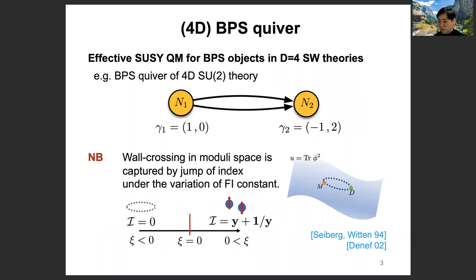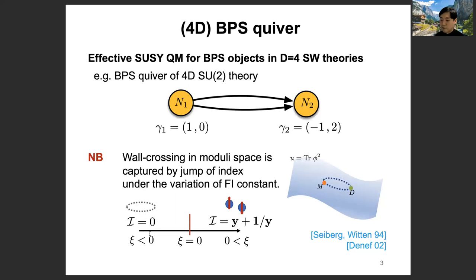This is a nice tool to capture the wall-crossing behavior on the moduli space of Seiberg-Witten type theories. Wall crossing in 4D theory is captured by the jump of Witten index under variation of FI constants. For instance, in the case of 4G-SE2 pure gauge theory, in the asymptotic region of moduli space, the theory is weakly coupled and the W-boson is a stable particle. But near the center, the W-boson decays into monopoles and dyons. This behavior is captured by the Witten index of the two-node effective quiver, and this jump of Witten index captures the wall-crossing behavior happening in 4D.